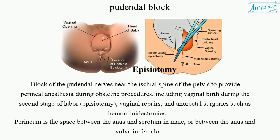Block of the pudendal nerves near the ischial spine of the pelvis to provide perineal anesthesia during obstetric procedures, including vaginal birth during the second stage of labor, episiotomy, vaginal repairs, and anorectal surgeries such as hemorrhoidectomies.